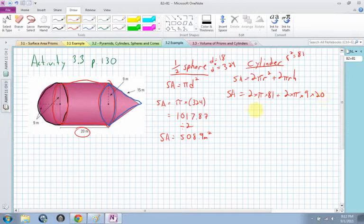So I multiply this out, and I get 508.9, that's a coincidence, plus 1130.97. I add those both together, and I get a surface area of 1639.9 meters squared.